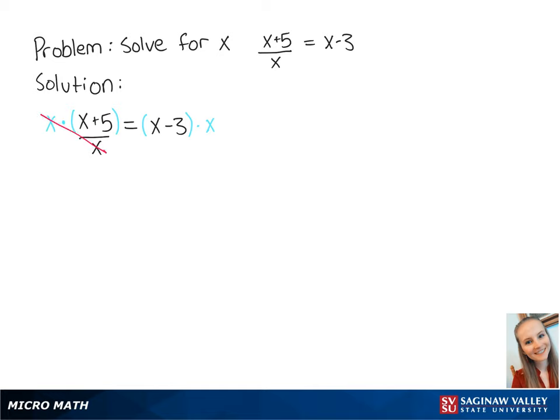The x's on the left side cancel out, so if we multiply the right side out, this leaves us with x plus 5 equals x squared minus 3x.